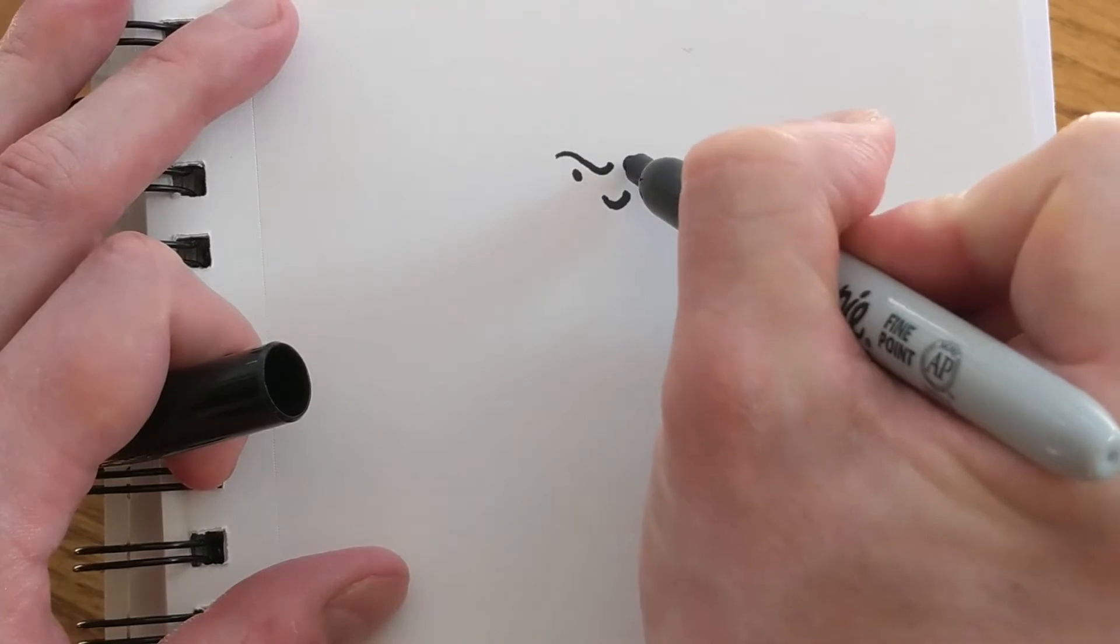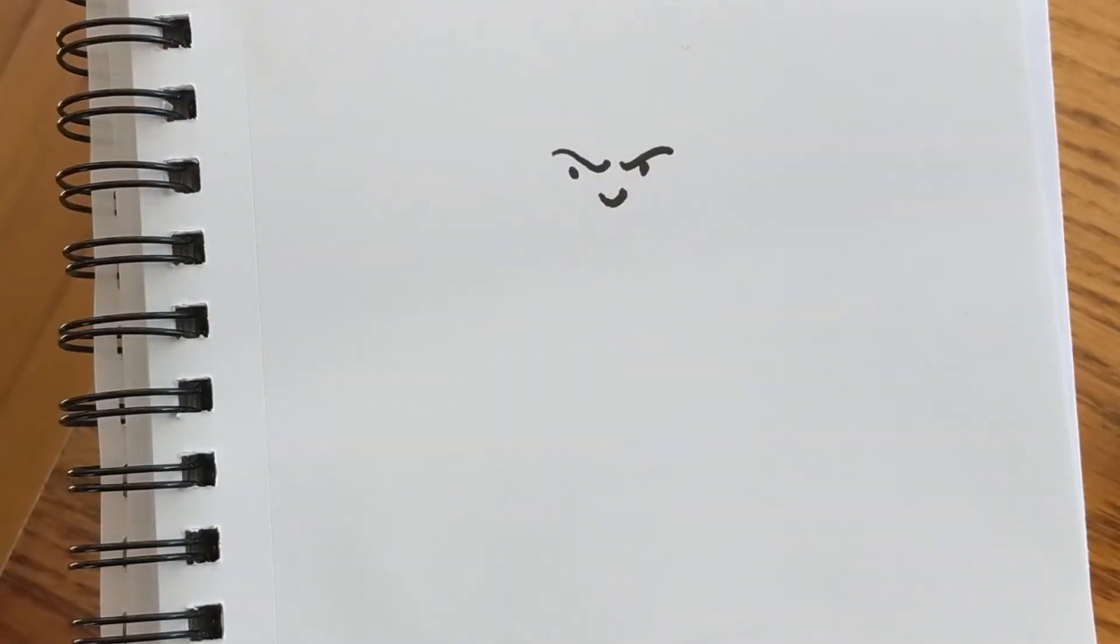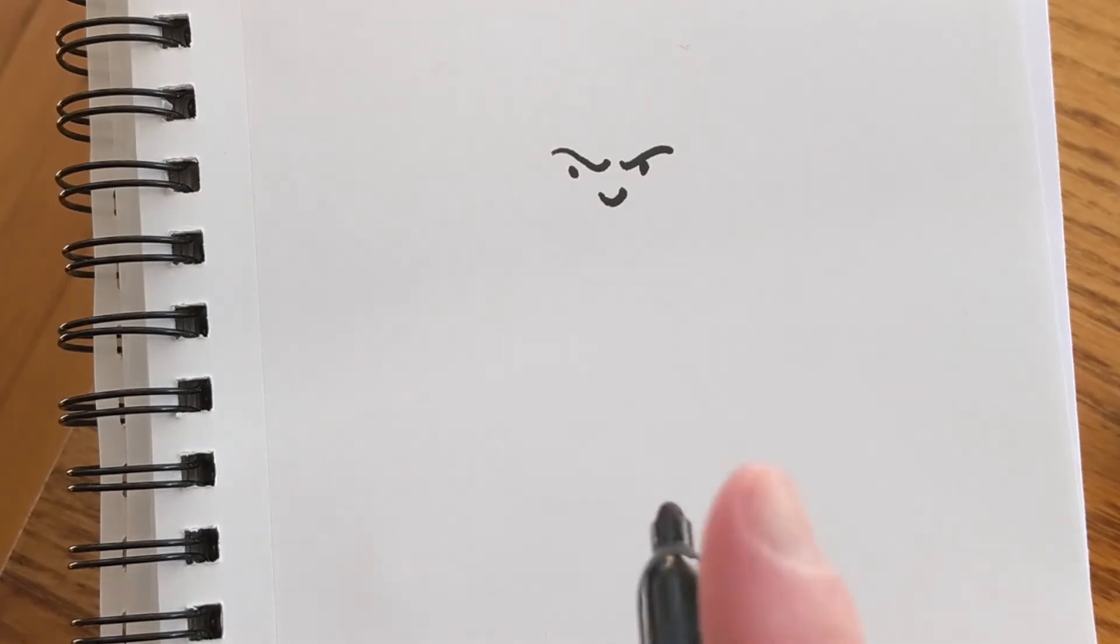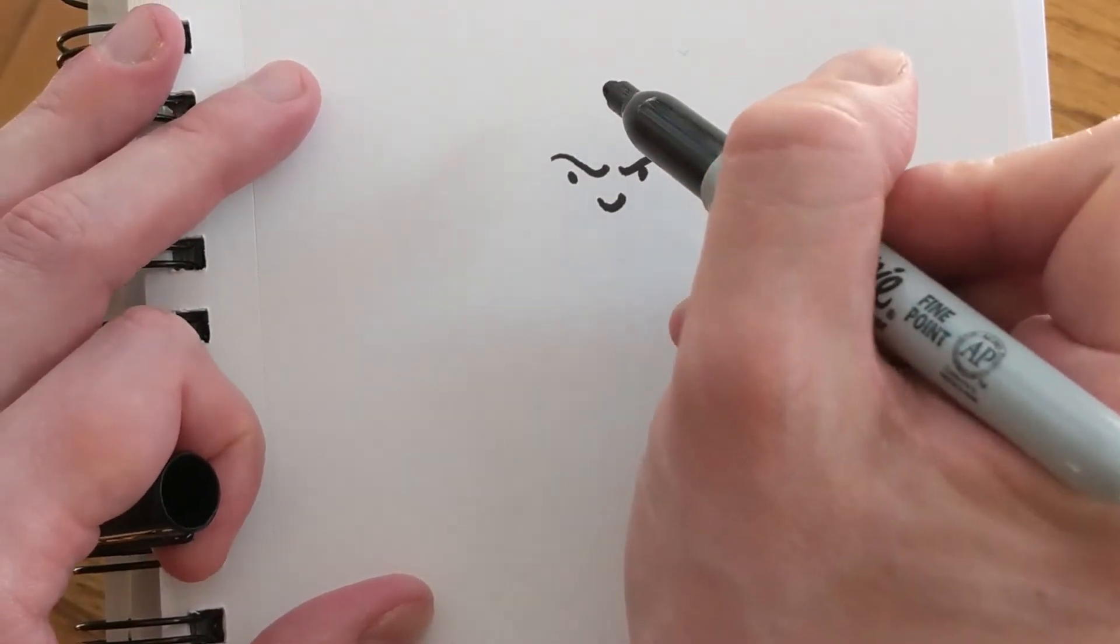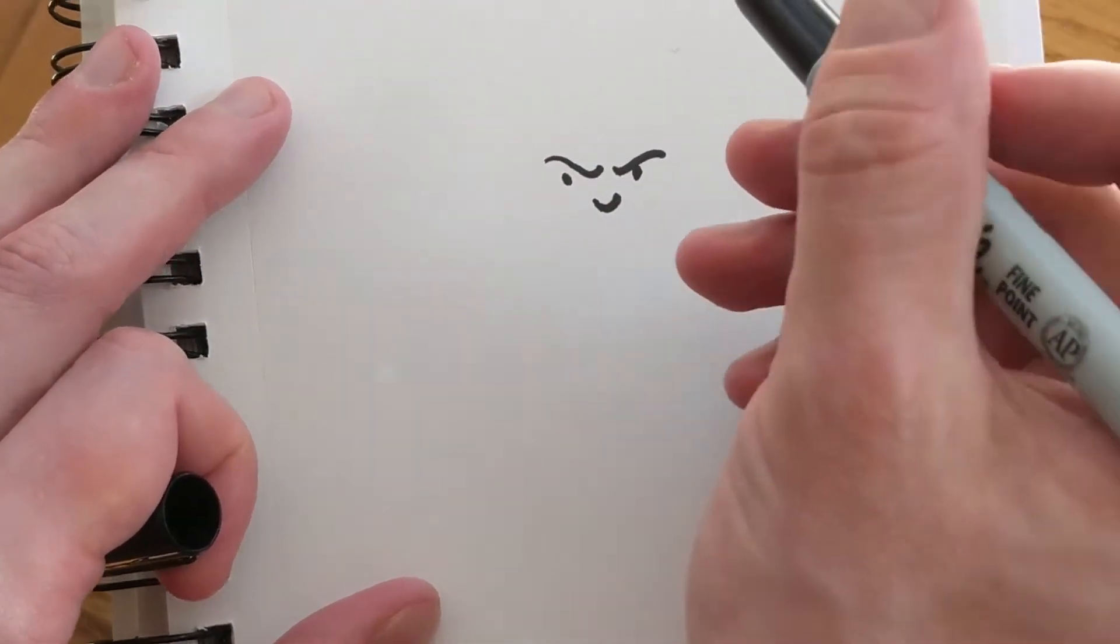Because she's kind of mischievous, I like to give her some curvy little eyebrows that are often quite close to her little dot eyes, like her eyebrows are kind of scrunched down, scheming something.